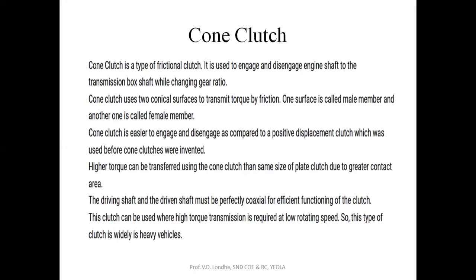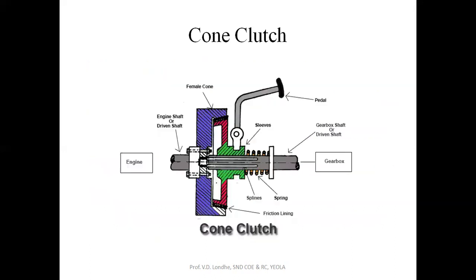High torque can be transmitted using a cone clutch compared to the same size of plate clutch, due to greater contact area. The clutch can be used where high torque transmission is required at low rotating speed, so this type of clutch is now widely used in heavy vehicles.